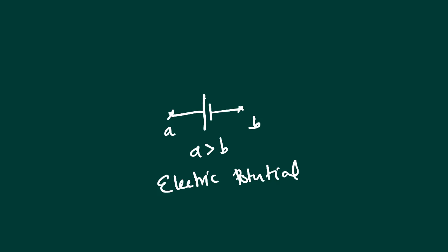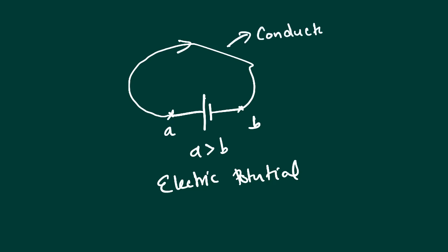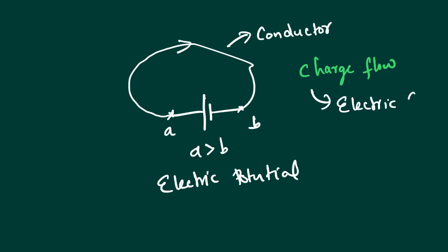For electric potential, we can use electrostatics as well. If we have two different electric potentials, do we have current flow? No — not until we connect a conductor wire between them. Because it is a conductor, if we have a conductor, we can use electricity. This charge flow is called electric current.